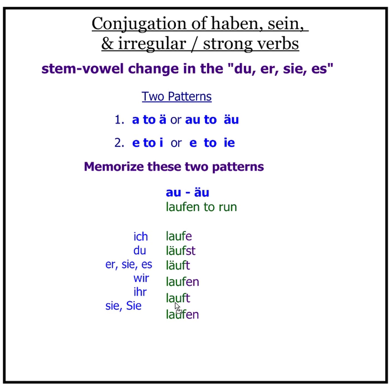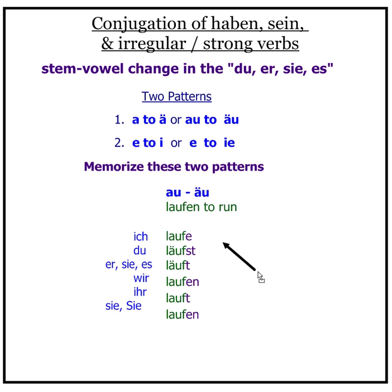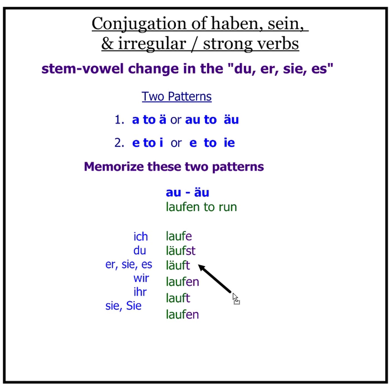Laufen, to run. The 'au' to umlautered 'äu' pattern is what we see in laufen: ich laufe, du läufst, er/sie/es läuft. Wir laufen, ihr lauft, sie/Sie laufen.